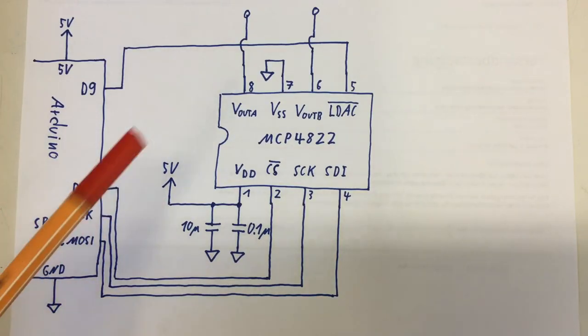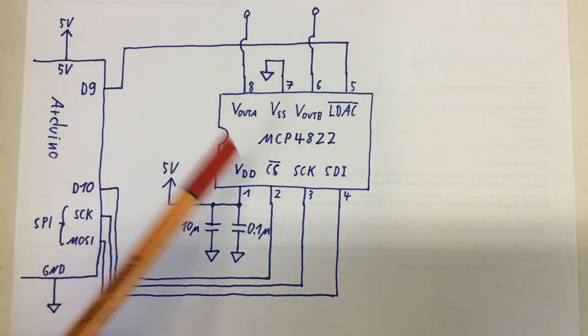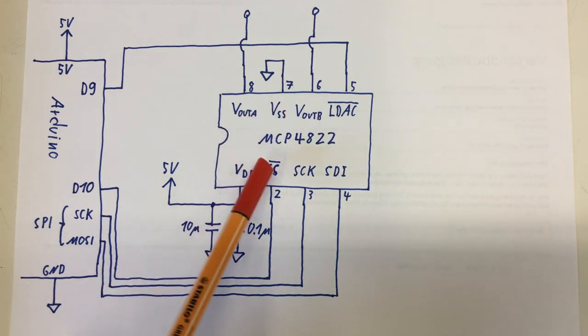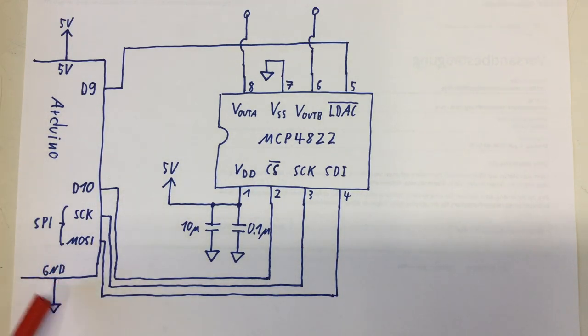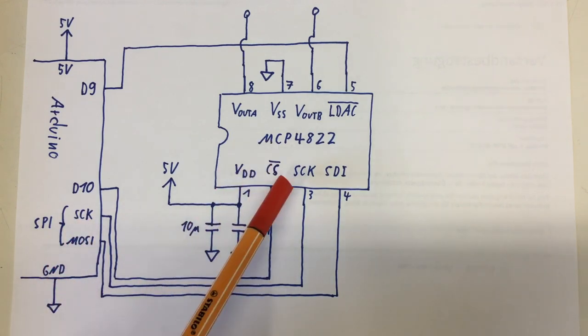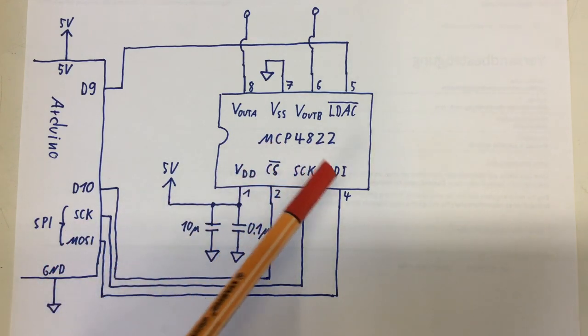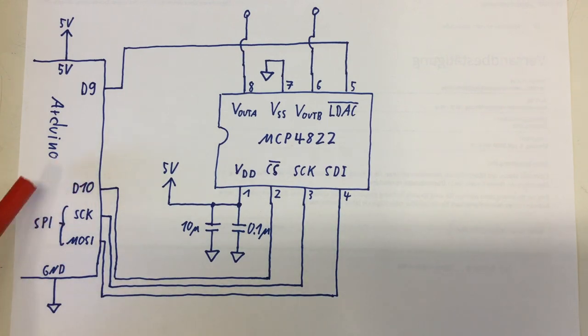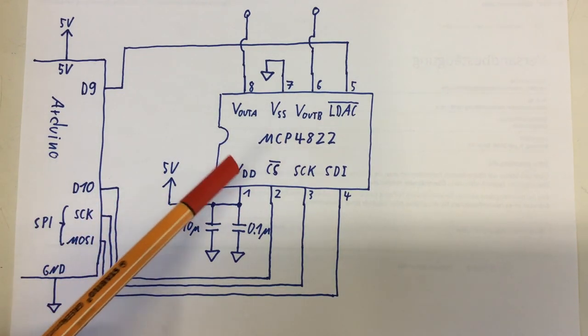We've got now enough from the data sheet to build a little circuit on the breadboard to get that thing up and running. So the SPI interface of the MCP4822 will be controlled by an Arduino. So we connect the Arduino master out slave in and serial clock pin to the serial clock pin and slave data in pin. And the digital pin 10 will act as our slave select.